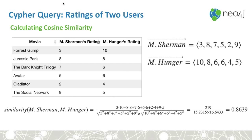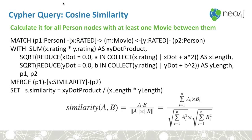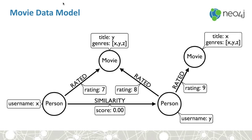Luckily, our data scientist Nicole White already implemented this for us. What this gives us is, for every two people in the graph who have seen any similar movie, a similarity score that updates our model. This produces a new relationship between people with some kind of score — username X and username Y have some similarity. It's a one-directional relationship and we reverse it from both ends equally.